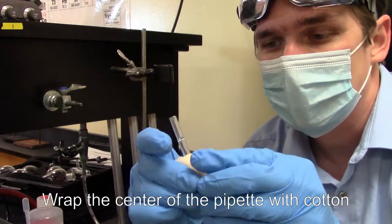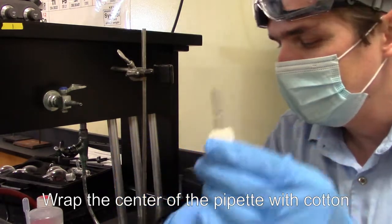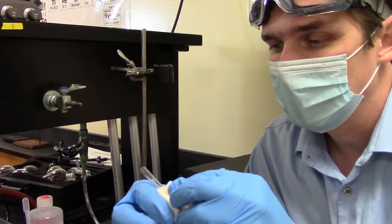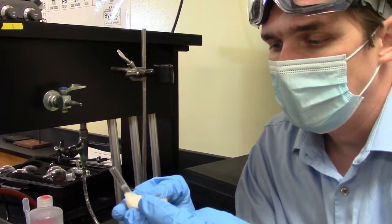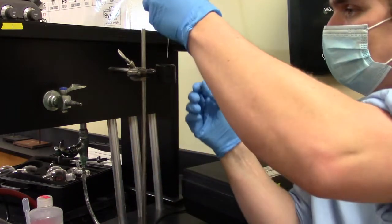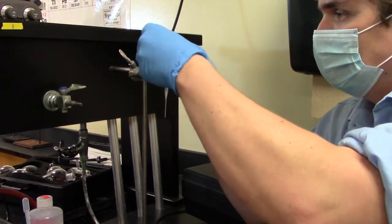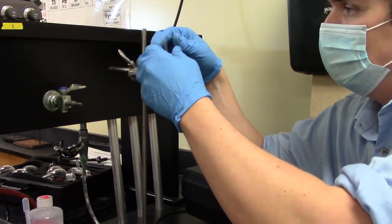I'm going to take my pipette. What I want to do is I want to wrap the center of it with my packing material. In this case, I've got some cotton. I'm going to pack this as tight as I can. This is going to serve as the support for the pipette. When I get it all in there, I'm going to slide it down into my holder. This should keep my tube pretty secure.